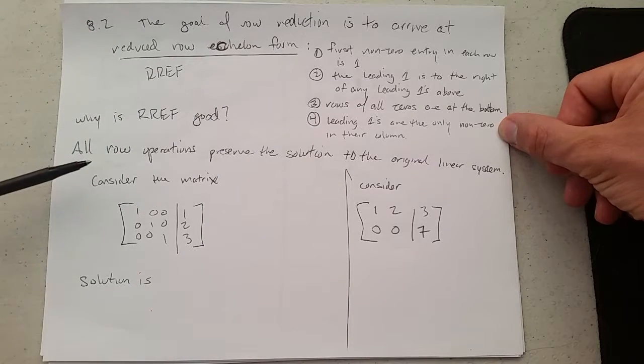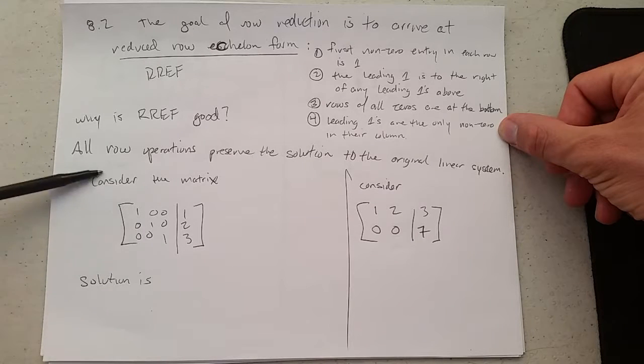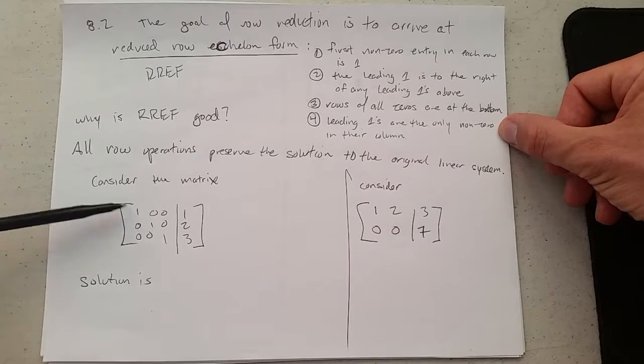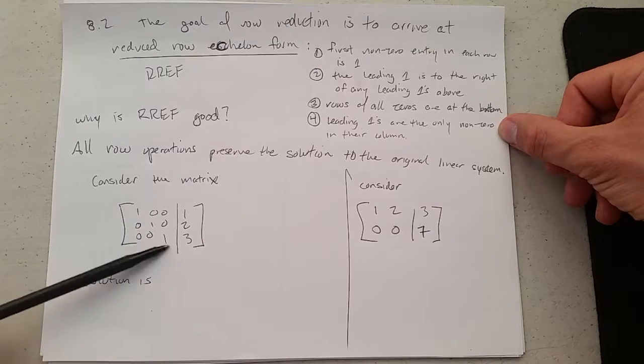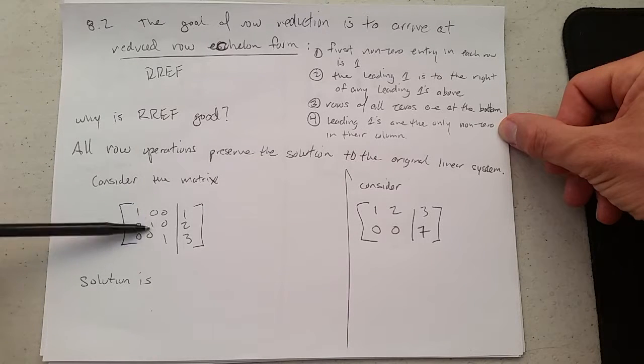So here are some row-reduced echelon form matrices. So here's the matrix. This is the perfect row-reduced echelon form. Every row, the 1, is the first non-zero entry in it.